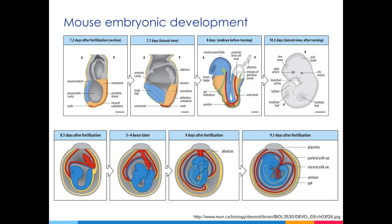In the mouse, as gastrulation proceeds, the embryo is essentially forming inside out. But between embryonic days 8 and 9 out of a total gestation of 18 to 21 days, the embryo goes through a complicated process known as turning. As a result of turning, the initial cup-shaped epiblast turns inside out so that the dorsal surface of the embryo now faces outward, while the ventral surface with the umbilical cord connecting the embryo to the placenta faces inward.